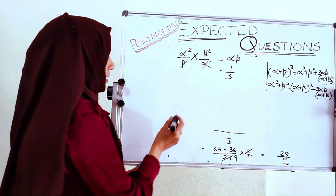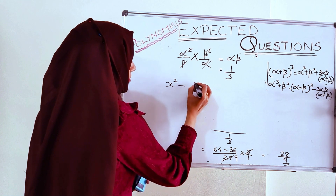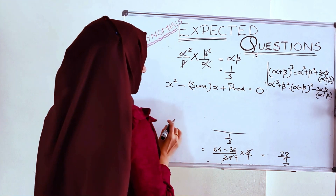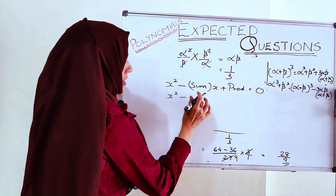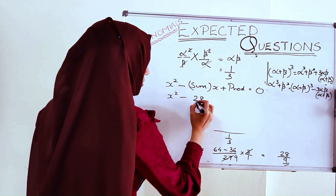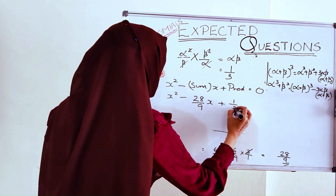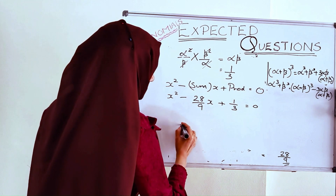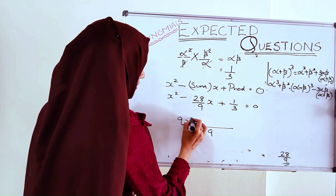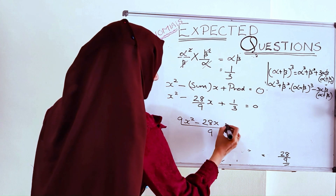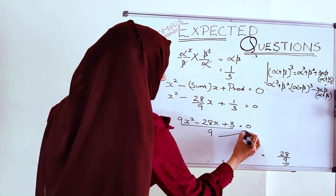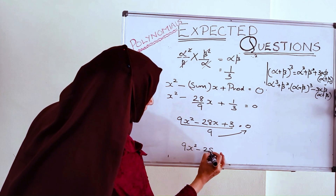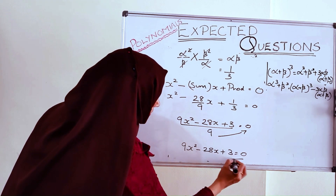From the sum 28/9 and product 1/3, we can find our new quadratic polynomial using the form x² − (sum of zeros)x + (product of zeros) = 0. Substituting: x² − (28/9)x + 1/3 = 0. Taking LCM as 9, we get 9x² − 28x + 3 = 0. So our new quadratic polynomial is 9x² − 28x + 3 = 0.